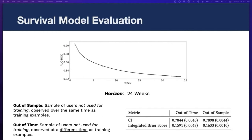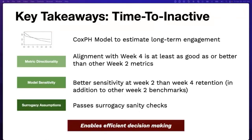Out-of-sample results test on users who are not in the training sample. Out-of-time results show performance during a time period different from the training period. Model performance is quite similar for both, which serves as a sanity check to ensure that the comparability assumption is satisfied.